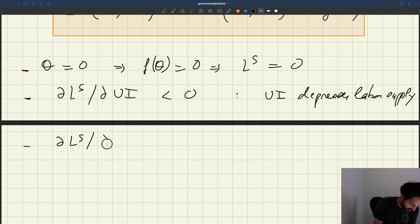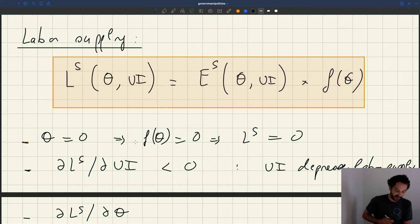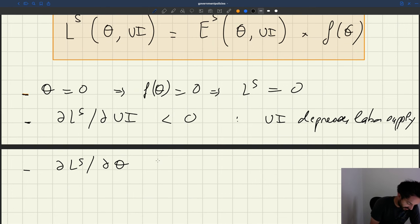What about the derivative of labor supply with respect to tightness? Well, that's going to be positive. So when you have a higher tightness, the job finding rate per unit effort, f of theta, goes up. And also, the job search effort ES goes up. So of course, your labor supply is going to be increasing here too. So that's exactly like what we had before.